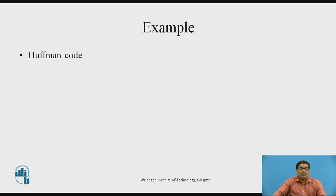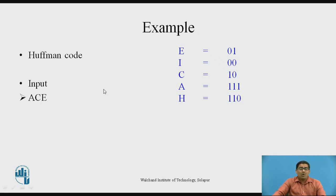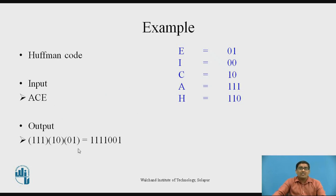Now, for another example related to Huffman encoding: we take input symbol S as A, C, E. Using the codewords from the previous table, for A we write 1, 1, 1; for C we write 1, 0; and for E we write 0, 1. Therefore, the total encoded output for the input S becomes: 1, 1, 1, 1, 0, 0, 1. This is one of the simplest steps for encoding.